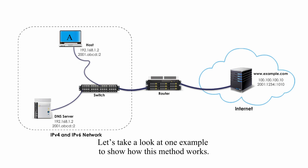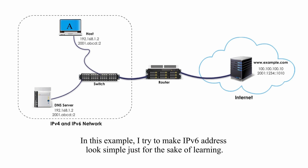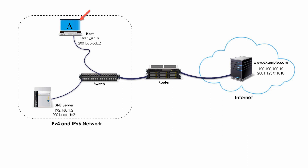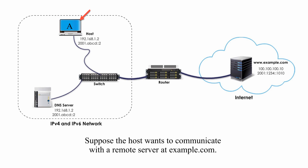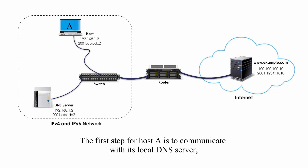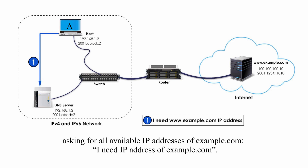Let's take a look at one example to show how this method works. In this example, I tried to make the IPv6 address look simple, just for the sake of learning. Host A is a dual stack device. Suppose the host wants to communicate with a remote server at example.com. The first step for Host A is to communicate with its local DNS server, asking for all available IP addresses of example.com — such as: "I need the IP address of example.com."